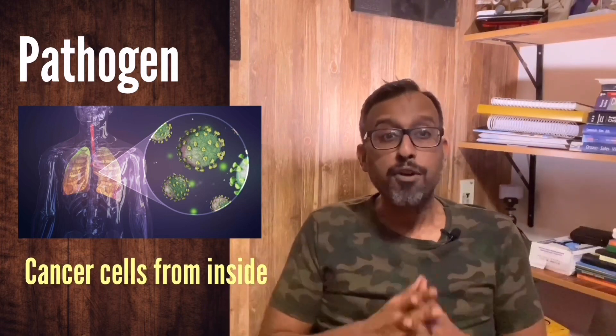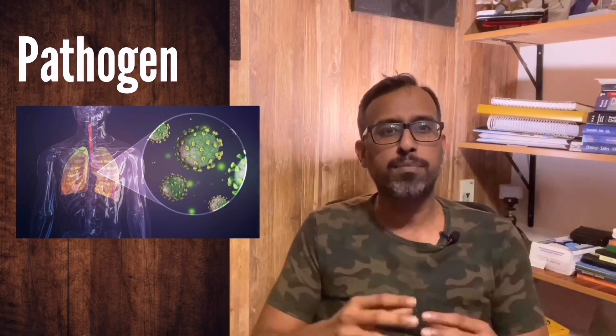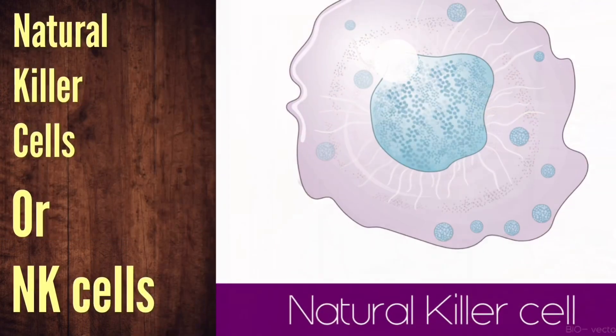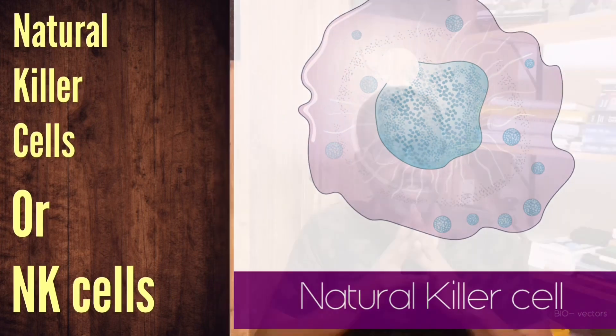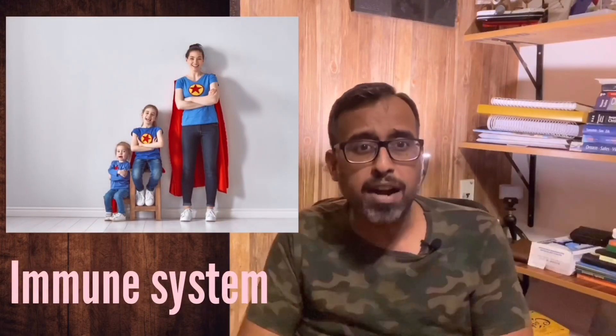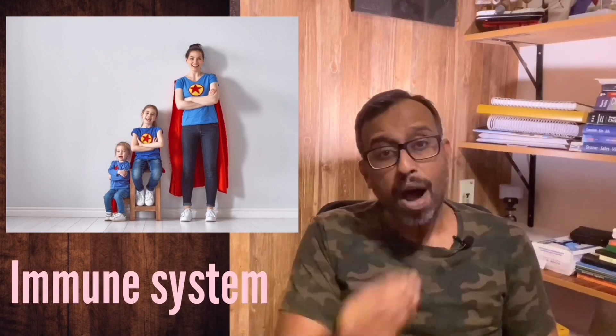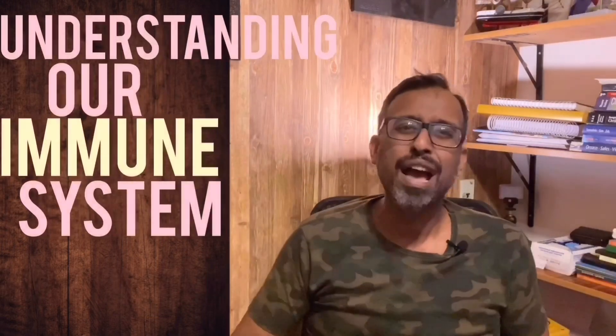Diseases like cancer start from inside our body and can also be identified and destroyed if our inner immune system is good. We have cells called natural killer cells which help in identifying cancer cells or precancerous conditions and destroying them. So it goes without saying that we should know how to boost our immune system and learn about each cell to keep it at its best.